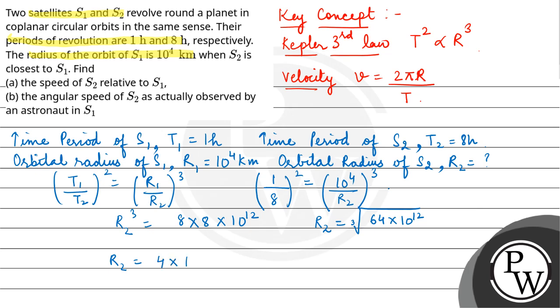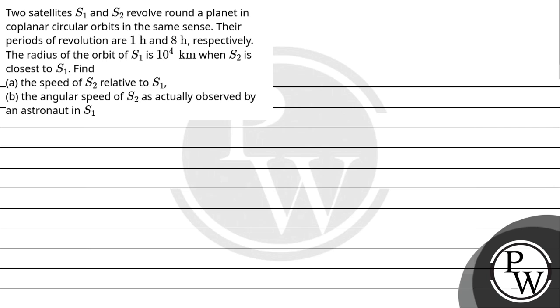Velocity of S1: V1 = 2πR1/T1. With R1 = 10^4 and T1 = 1 hour, V1 = 2π × 10^4 km/h.